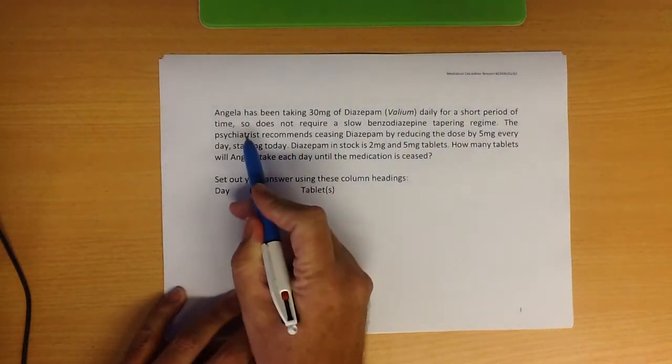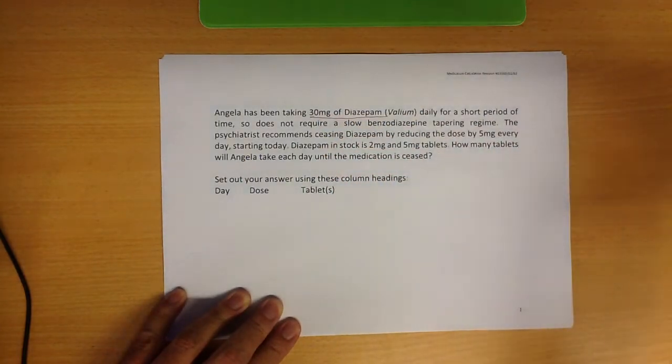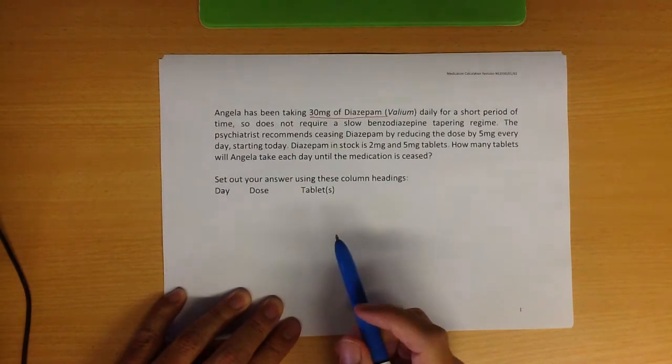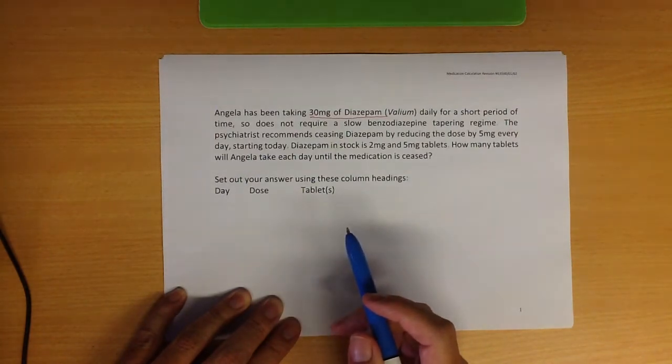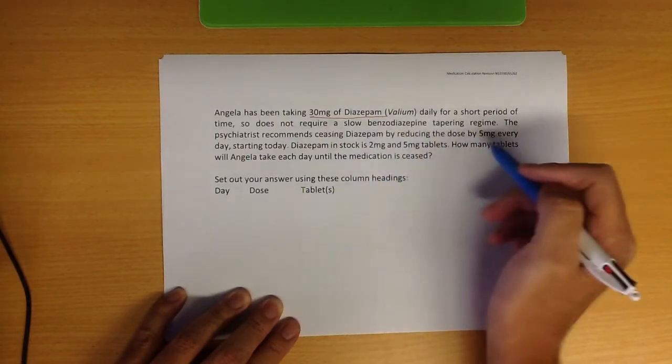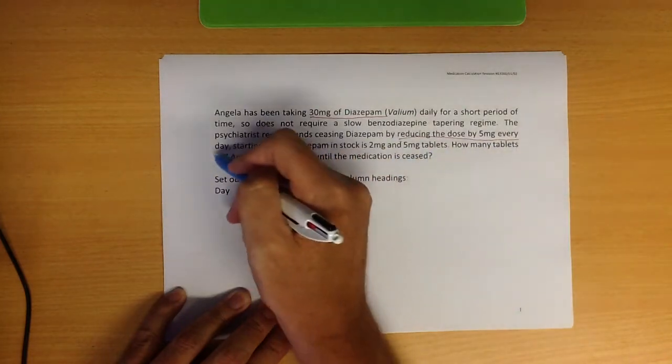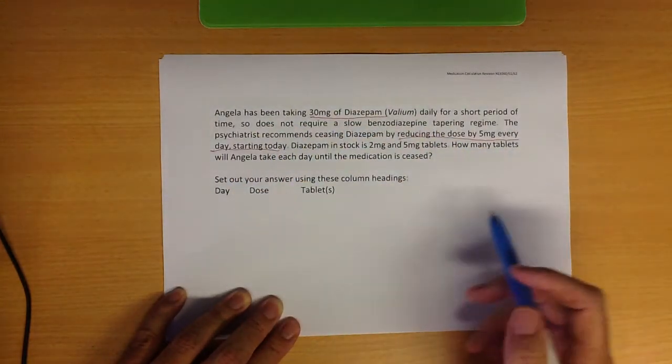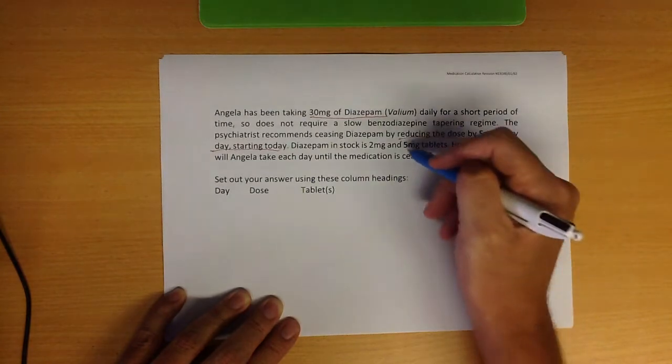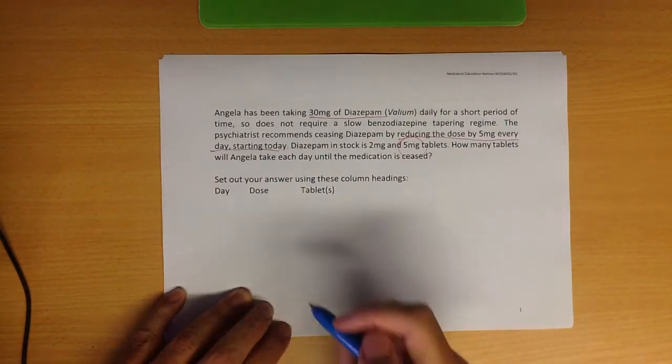This scenario here: Angela has been taking 30 milligrams of diazepam daily for a short period of time, so it does not require a slow benzo-tapering regime. The psychiatrist recommends ceasing diazepam by reducing the dose by 5 milligrams every day starting today. Diazepam in stock is 2 milligrams and 5 milligrams. Obviously the 2 milligrams are no good to us. How many tablets will Angela take each day until the medication has ceased?